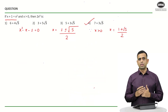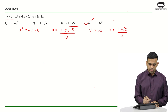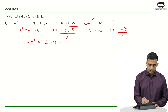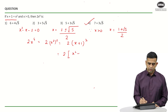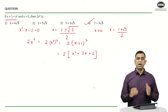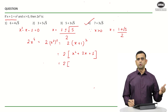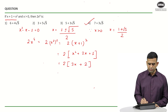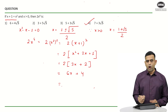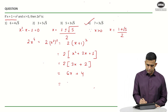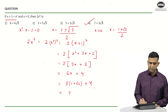Let us look at one more way to solve the question. Since x squared equals x plus 1, the term 2 into x raised to 4 can be written as 2 times x squared whole squared, and x squared can be replaced by x plus 1 whole squared. Expanding gives x squared plus 2x plus 1. Substituting x squared equals x plus 1 gives x plus 1 plus 2x plus 1, which is 3x plus 2. So the full expression becomes 6x plus 4. Putting x equals 1 plus root 5 divided by 2: 6 times 1 plus root 5 divided by 2 gives 3 times 1 plus root 5 plus 4, which is 3 plus 3 root 5 plus 4, giving 7 plus 3 root 5.